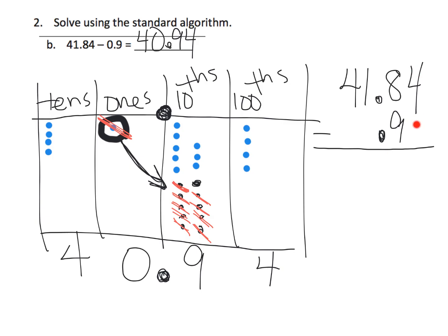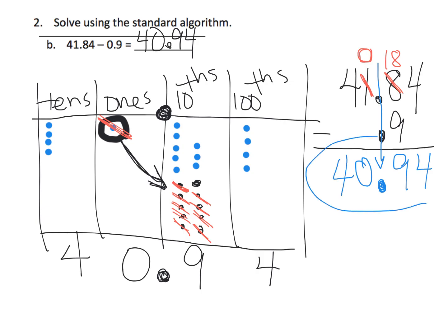So now we're ready to subtract. Over here it says we have four hundredths, take away nothing — that leaves us with four. Then we have eight tenths take away nine tenths, which we can't quite do right now. So we take this one whole, cash him in leaving zero, and that gives us ten tenths — so instead of eight tenths, we now have eighteen tenths. Eighteen tenths take away nine tenths gives us nine tenths. Then zero whole numbers take away zero leaves zero, and four tens take away no tens gives four tens.